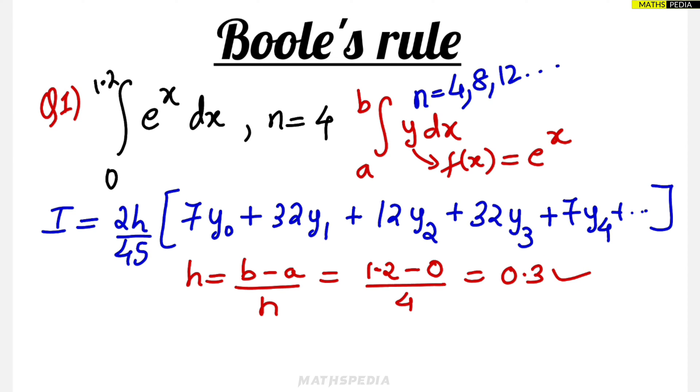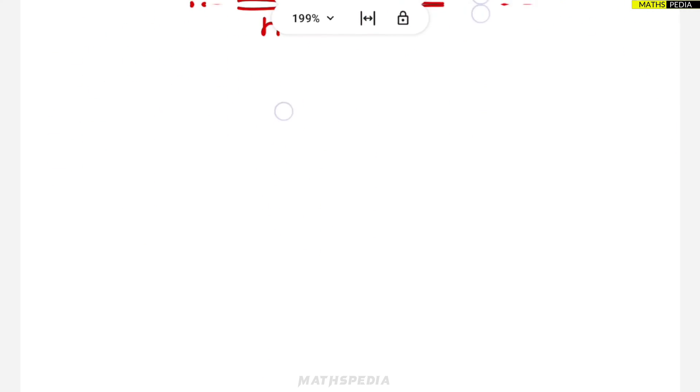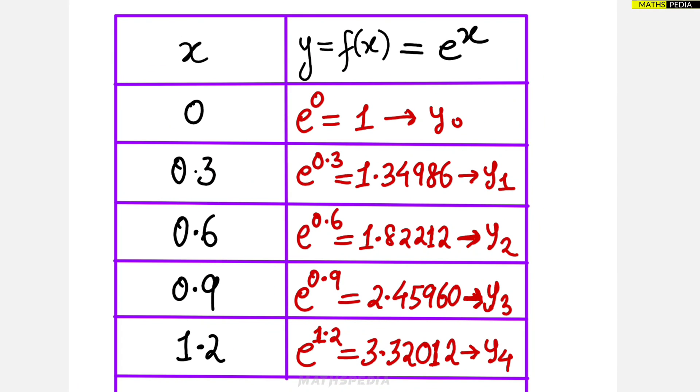This is the value we are getting for h. Based on this h we have to form the table. This is how the table looks - we have to make two columns. The first column will have x value, second column will have y value. y value is nothing but the function of x, which is equal to e^x given in the question. Now x starts with 0 because the question given was from 0 to 1.2, e^x dx.